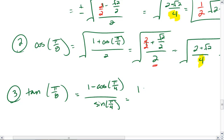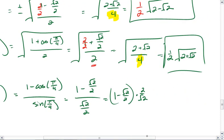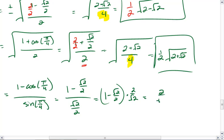Which then equals 1 minus root 2 over 2, all over root 2 over 2. So it's the same as 1 minus root 2 over 2 times 2 over root 2. We get 2 over root 2 minus 1.